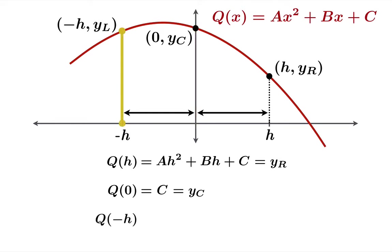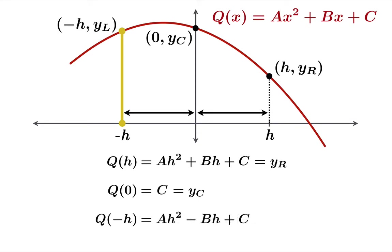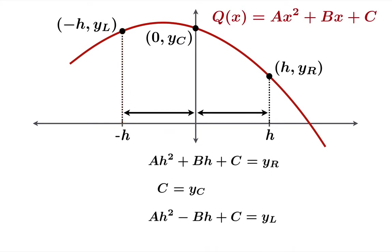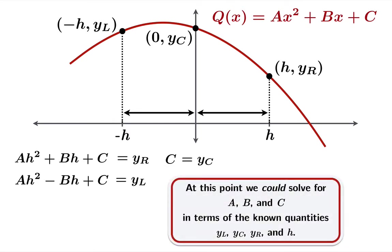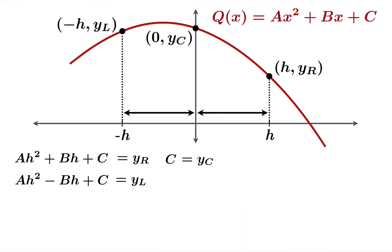And then q of negative h — plug negative h into your formula for q and simplify — you get ah squared minus bh plus c, which has to equal yl. So we get these three equations, and we're going to put them off to the side. At this point we could solve for a, b, and c in terms of these known quantities, but we're going to keep plowing ahead and just try to calculate the area and see where we land.